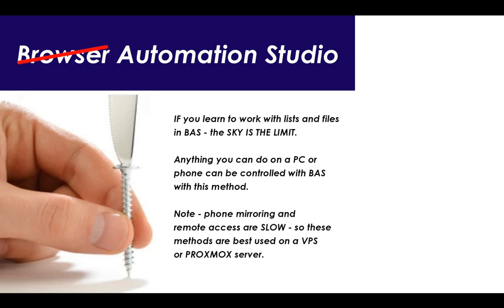If you learn to work with lists and files in Browser Automation Studio, that's the gist of what you have to learn on your own in this process. The sky's the limit, and it's very easy. They literally have a method for utilizing files for every single scenario — whether you want to only read the first entry in the file when you open it, read a random entry, go to the next one after utilizing it, or delete the one you're currently using. They walk you through it in dialogue screens.